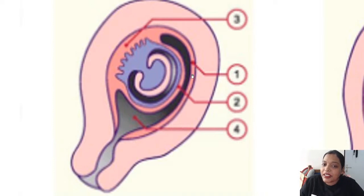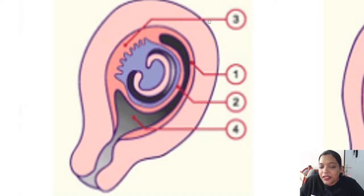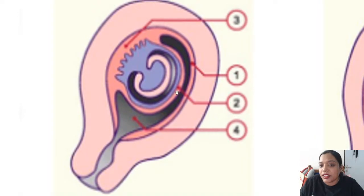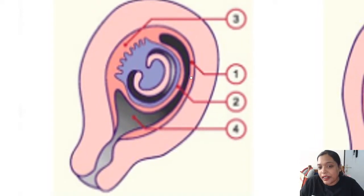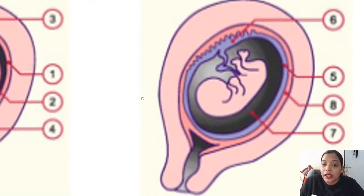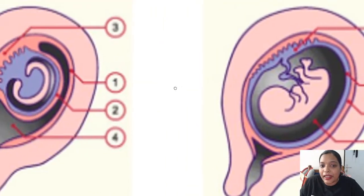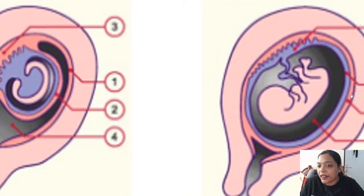Number one is the decidua parietalis. Number two, covering the uterine gestational sac, is the decidua capsularis. The part of decidua present below the blastocyst is the decidua basalis. The fourth structure is the uterine cavity. This picture is seen around 16 weeks, when the capsularis and parietalis fuse together.